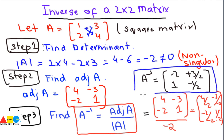We have discussed in detail all these steps in our previous lectures — how to find determinants and how to find the adjoint using different methods. You can refer to those lectures to check how you can find the determinant and the adjoint. Keep in mind the formula: A inverse equals the adjoint of A divided by the determinant of A.